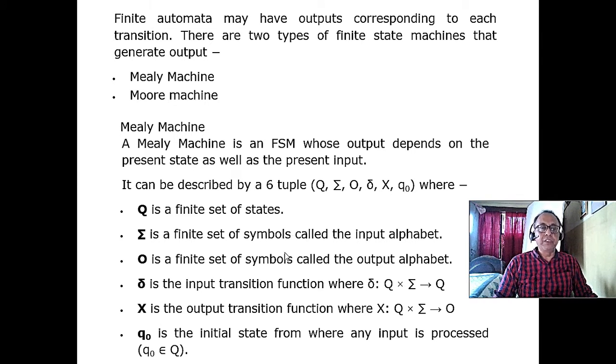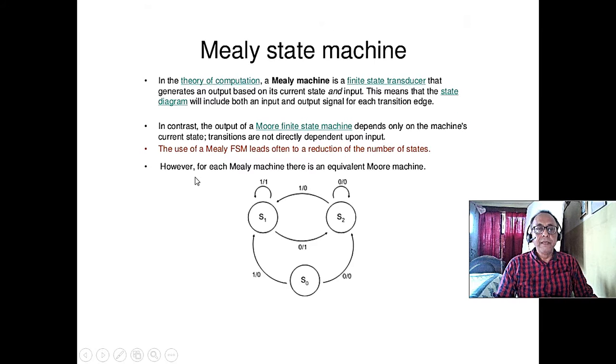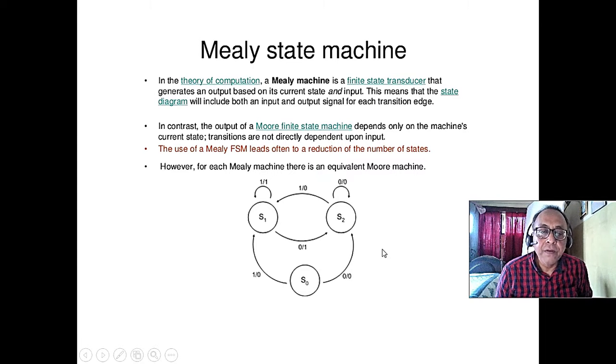These are the Mealy machine, and it gives the output with every transition. Let us have some diagram. This is the Mealy machine. Every state, say here, don't confuse, this first one is the input alphabet and the second 0 is from the output alphabet. Every transition, we have some output, and there is no concept of accept or reject. Any time it transits, every transition it gives output. This is a Mealy machine.